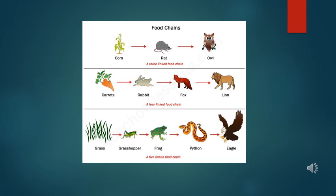Look at the three food chains given in the slide. You will note that each link follows a sequence. All food chains begin with plants as plants can make their own food by photosynthesis.